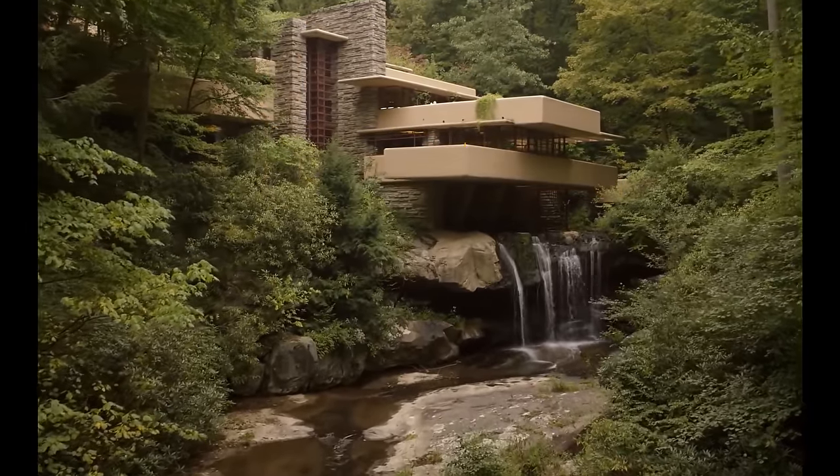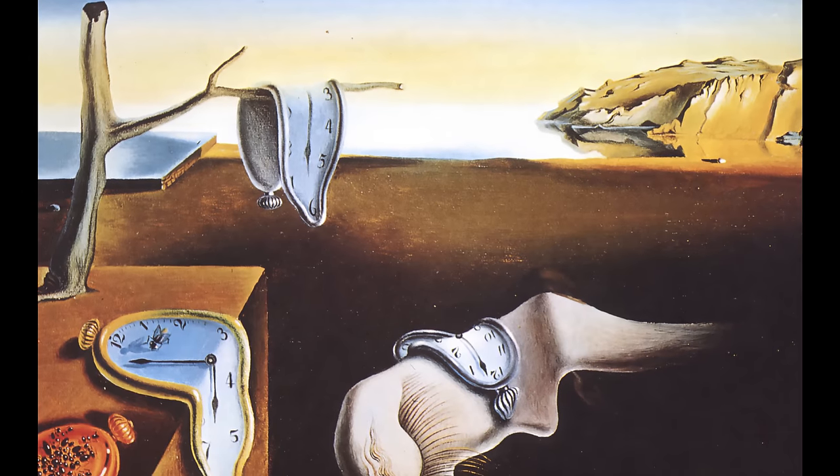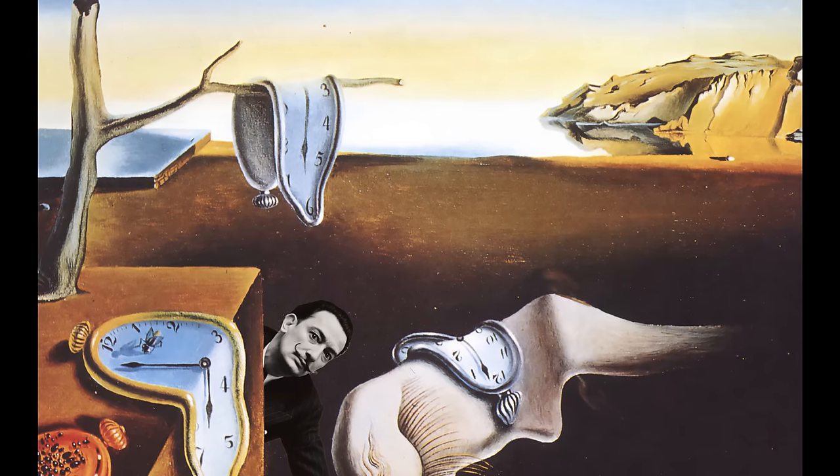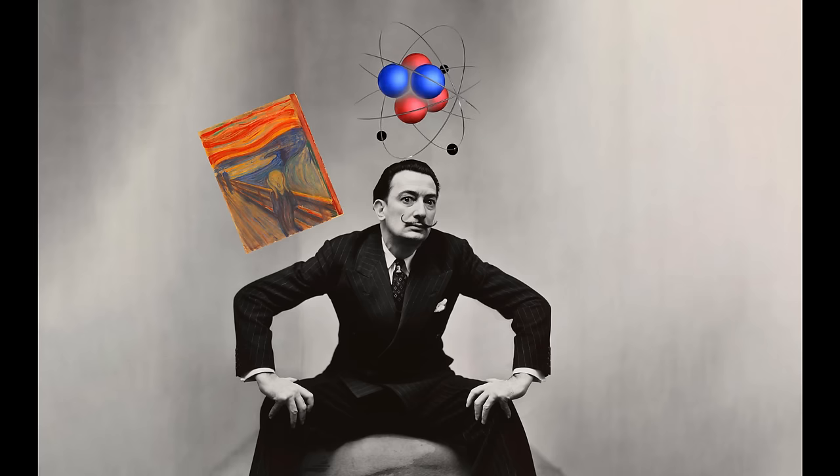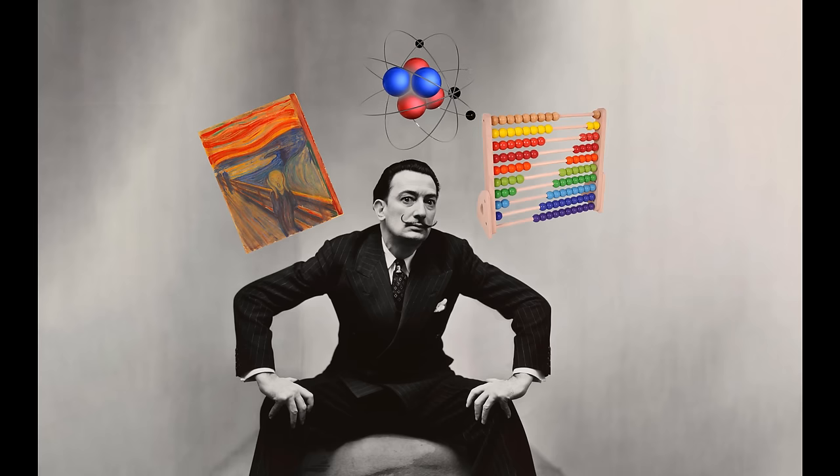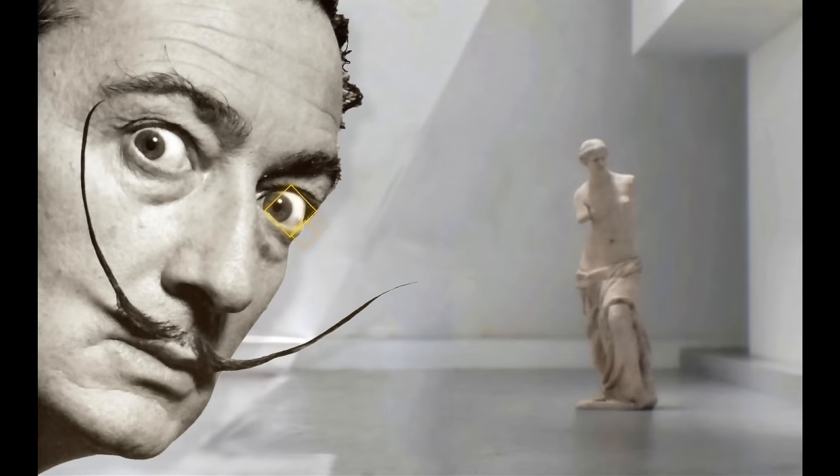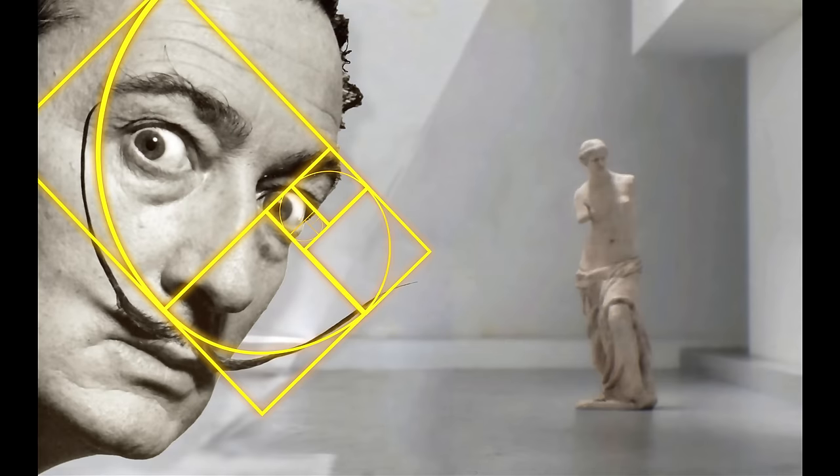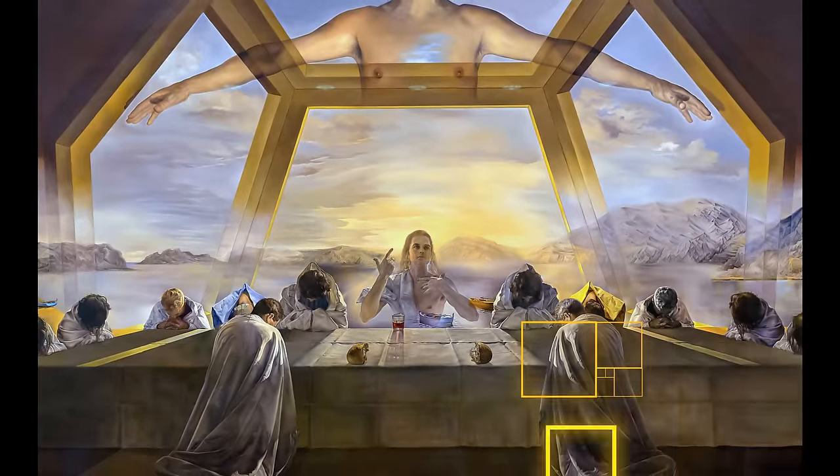It was also during this time that eccentric artist Salvador Dali was fascinated, like da Vinci, with combining art, science, and mathematics. Dali was inspired by the golden ratio and used it in many of his famous paintings, including The Last Supper.